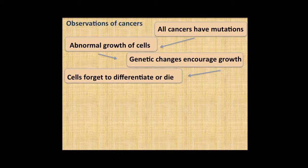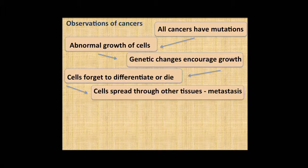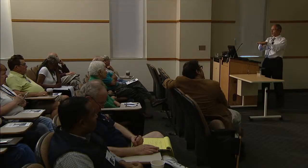Cells forget to differentiate or to die, and they learn how to spread beyond their normal bounds. We've all had a wound, a scar, surgery — the scar heals and knows exactly when to stop growing, settle down, and let that scar line heal and disappear. A cancer forgets all those principles. It forgets where to stop, forgets to die, forgets to remodel. It abuses all the normal processes of the cell and of the body.